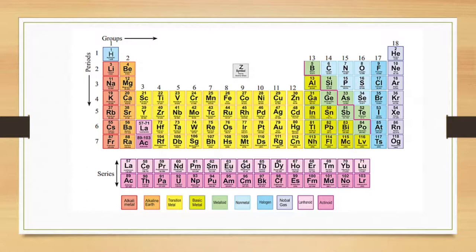Rutherfordium, symbol Rf. Dubnium, symbol Db. Seaborgium, symbol Sg. Bohrium, symbol Bh. Hassium, symbol Hs. Meitnerium, symbol Mt. Darmstadtium, symbol Ds. Roentgenium, symbol Rg. Copernicium, symbol Cn. Nihonium, symbol Nh. Flerovium, symbol Fl. Moscovium, symbol Mc. Livermorium, symbol Lv. Tennessine, symbol Ts. And Oganesson, symbol Og.